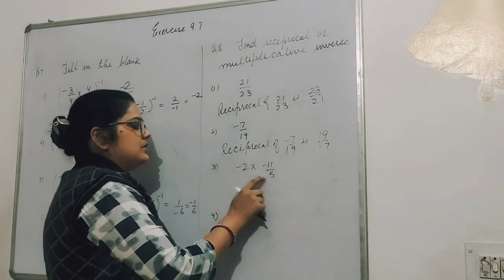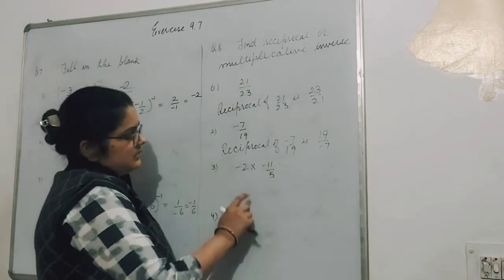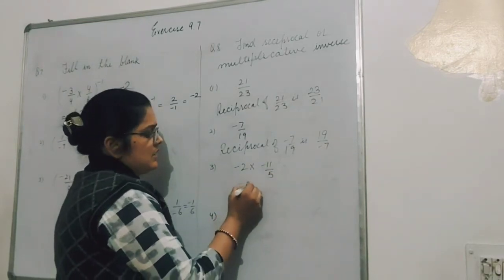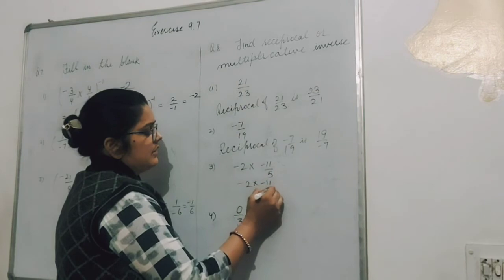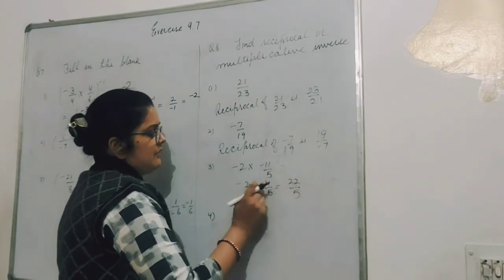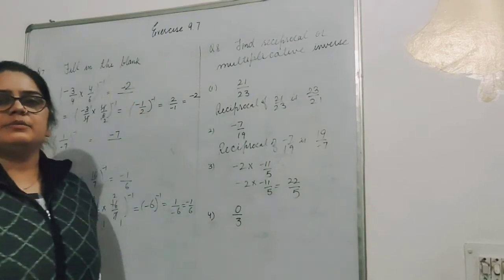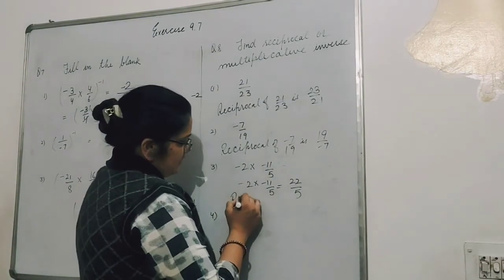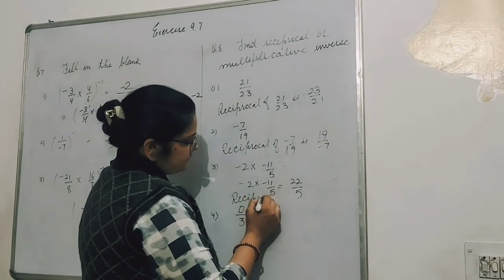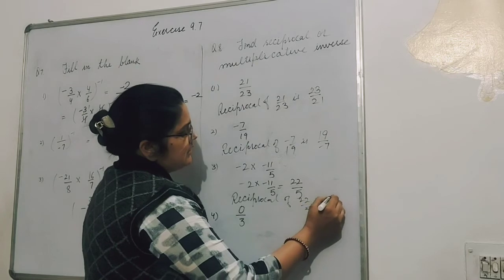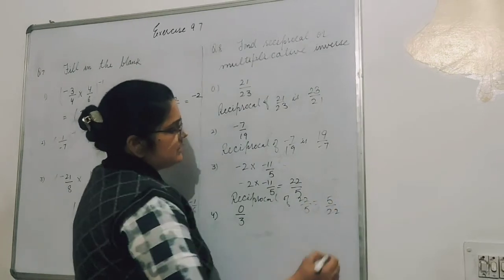Solve this: minus 2 into minus 11 upon 5. First we have to solve this. 11 times 2 is 22 upon 5. Both negative, so product will be positive. Now reciprocal of 22 upon 5 is 5 upon 22.